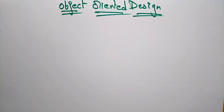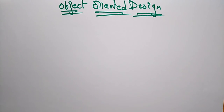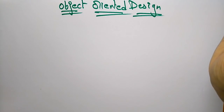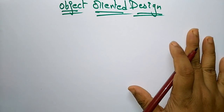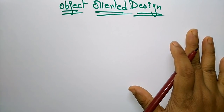Welcome students. Moving to the next topic: object-oriented design. In the previous video I explained about object-oriented analysis. After analyzing the project, the next step is object-oriented design. After object-oriented analysis, you have to start with the designing process. In this stage, a conceptual model is developed further into an object-oriented model using object-oriented design.